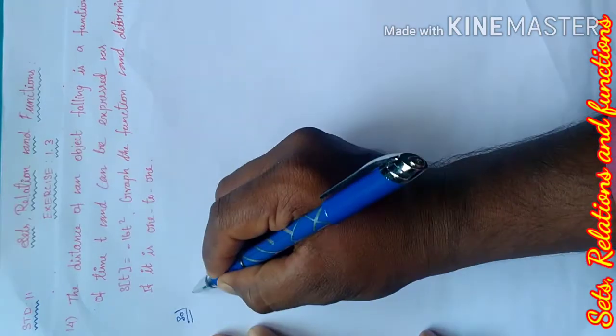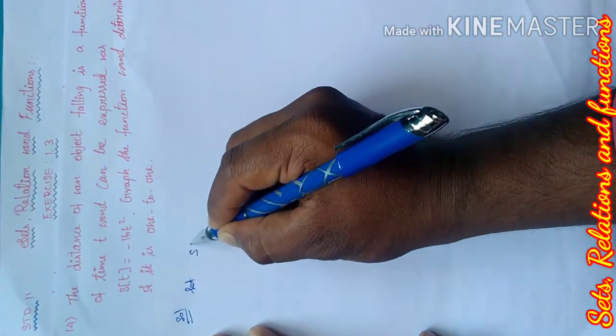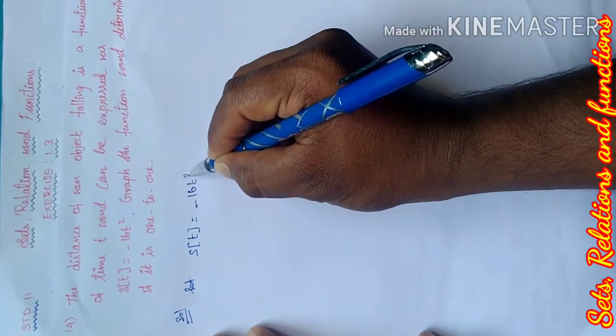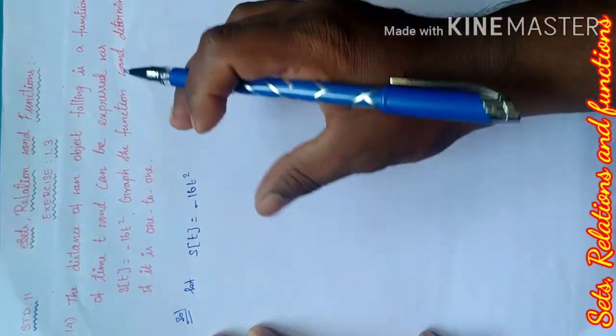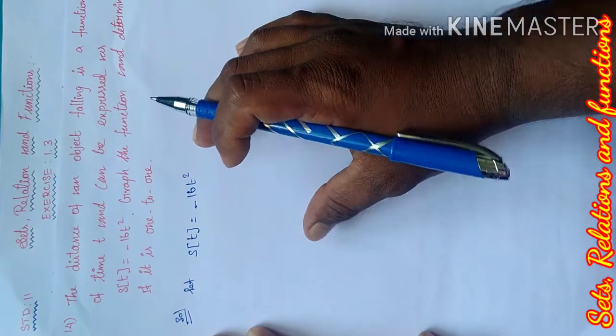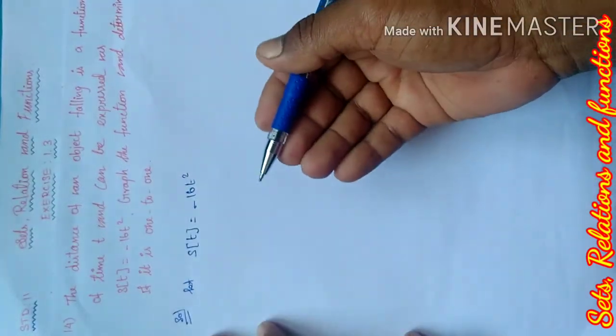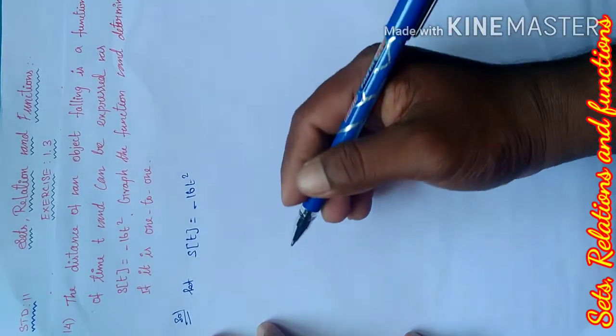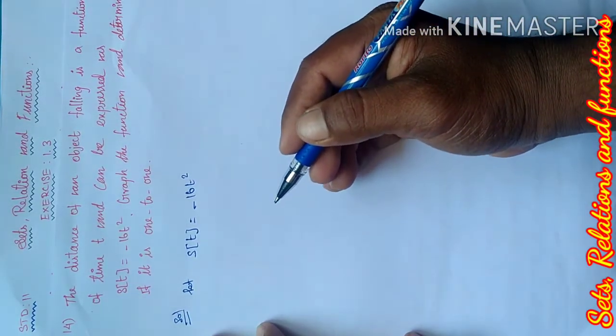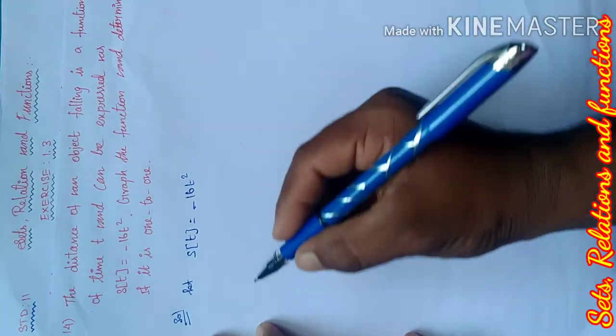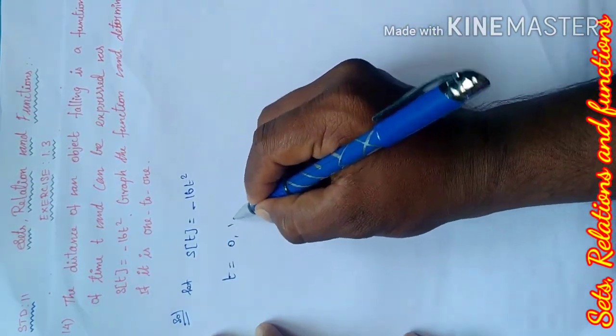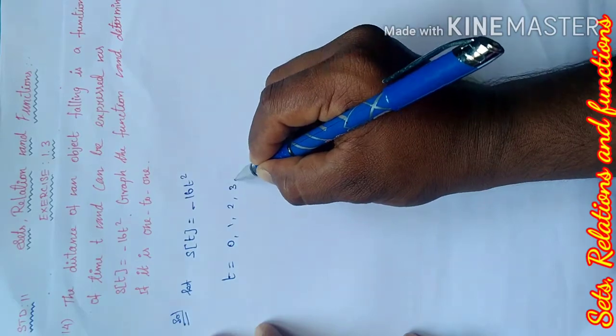We can see the solution. Let s of t equal to minus 16 t square. To determine one-to-one, solve the graph. Apply values to t and find the s of t values. Change t values.